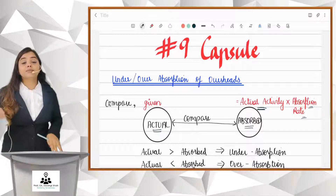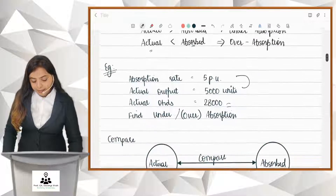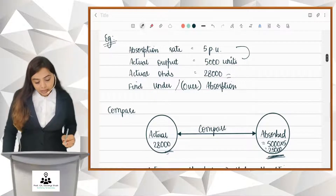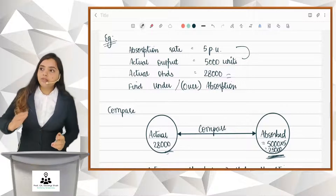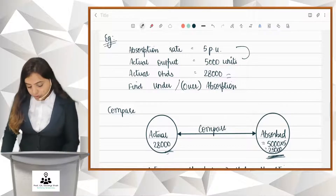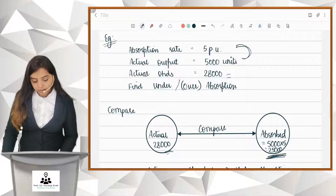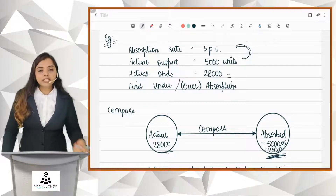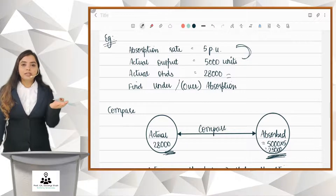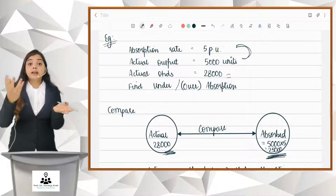Let's look at a numerical example. Absorption rate is 5 per unit and actual output is 5,000 units, so overheads absorbed = 5 × 5,000 = 25,000. The actual overheads incurred are 28,000. Since actual overheads of 28,000 exceed the recovered amount of 25,000, there is under absorption of 3,000.